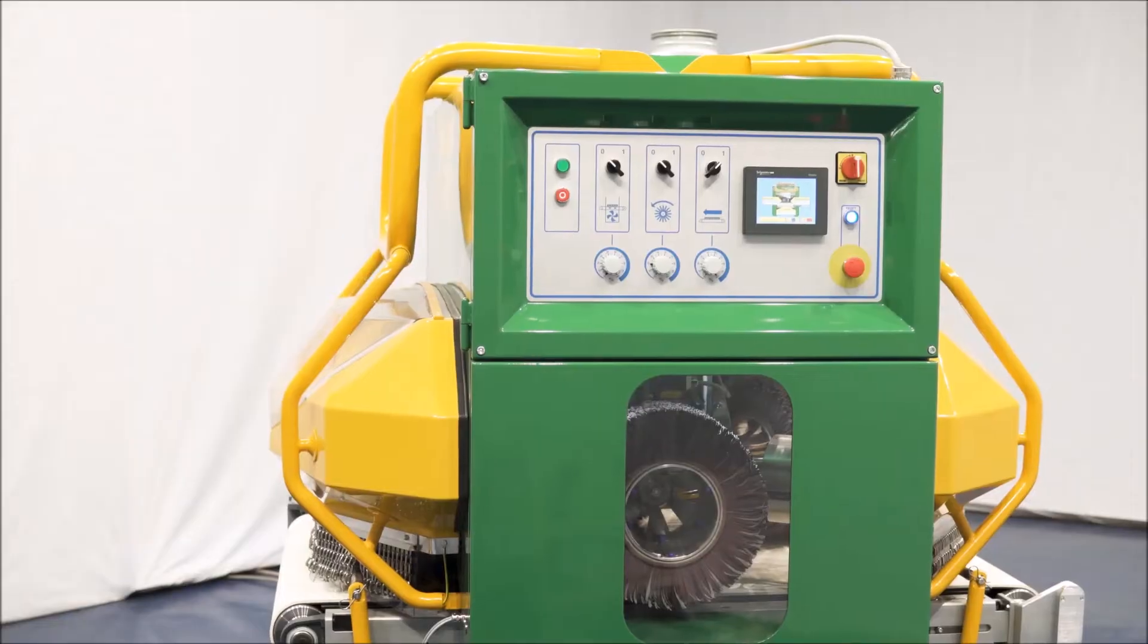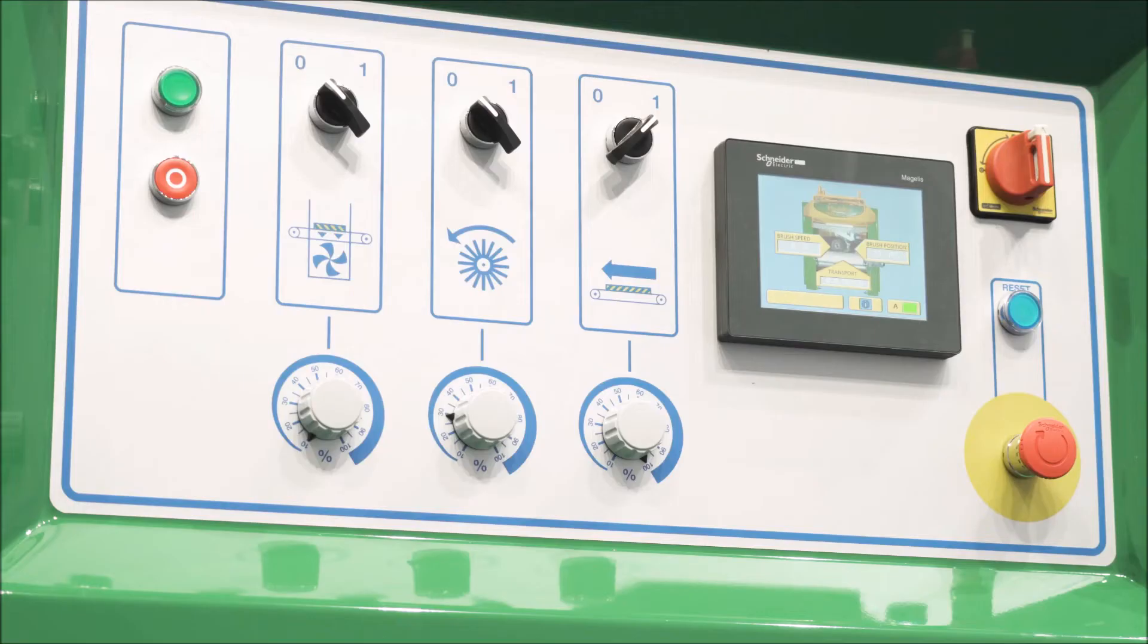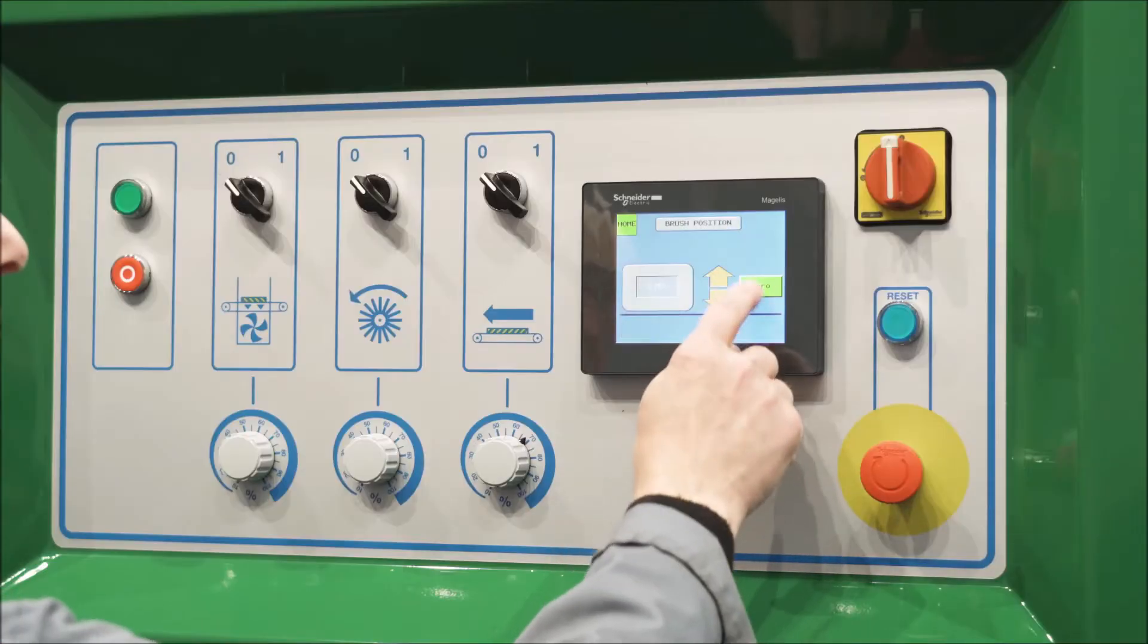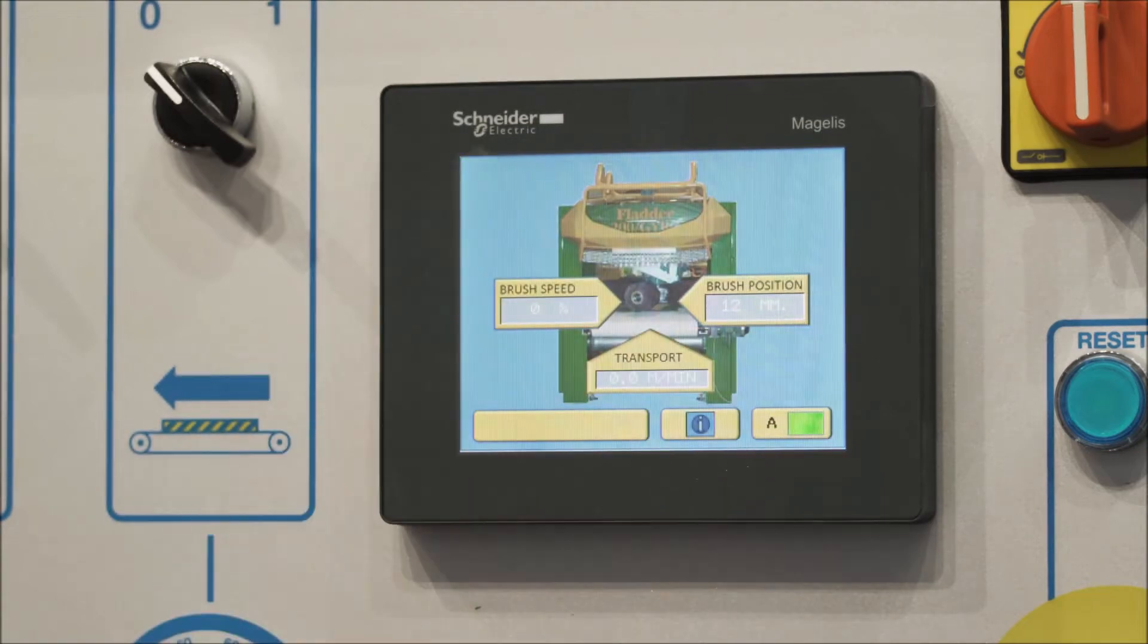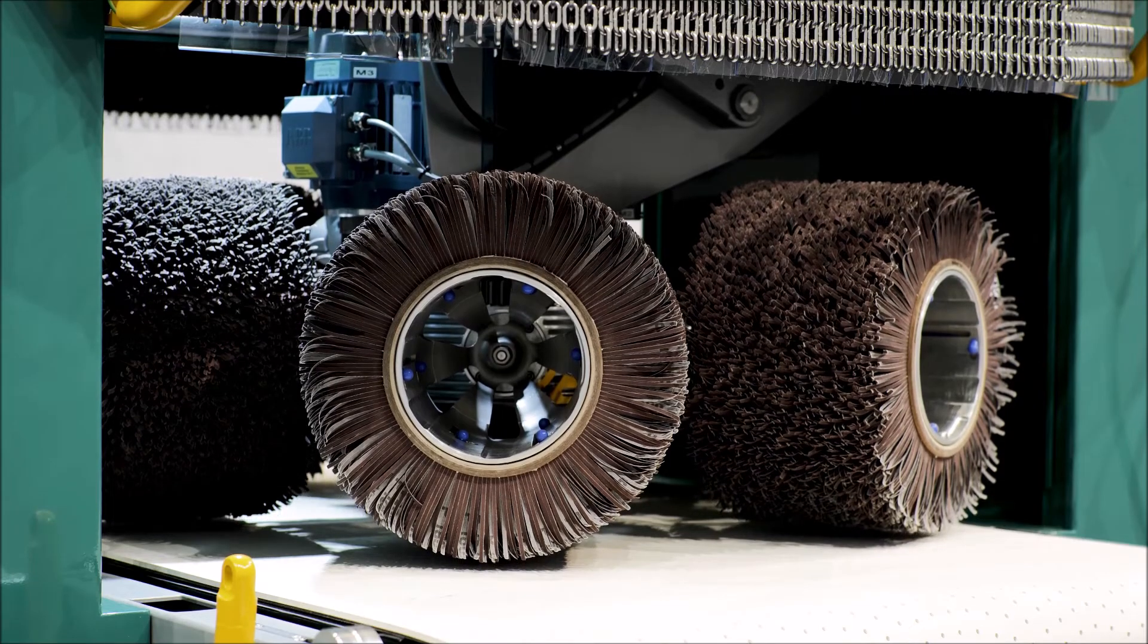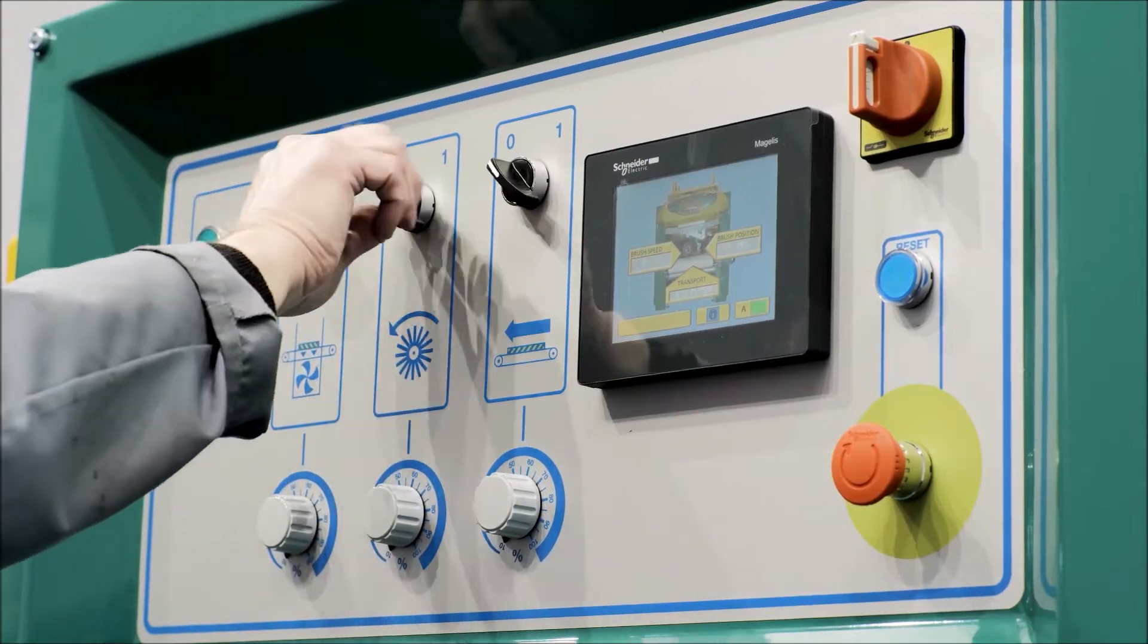A user friendly operator panel with symbols and touch screen makes it easy for the operator to manage all the functions of the system. To start the machine, you just have to set the height of the brushes that allows clean parts up to 100mm.